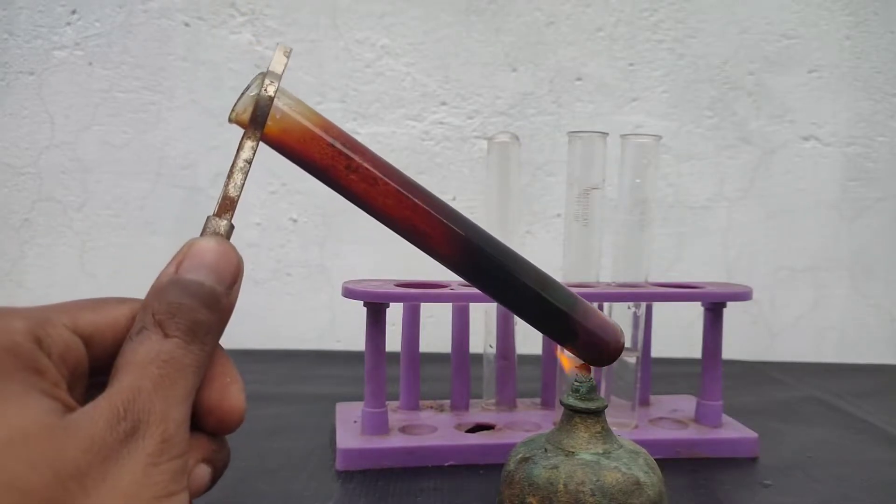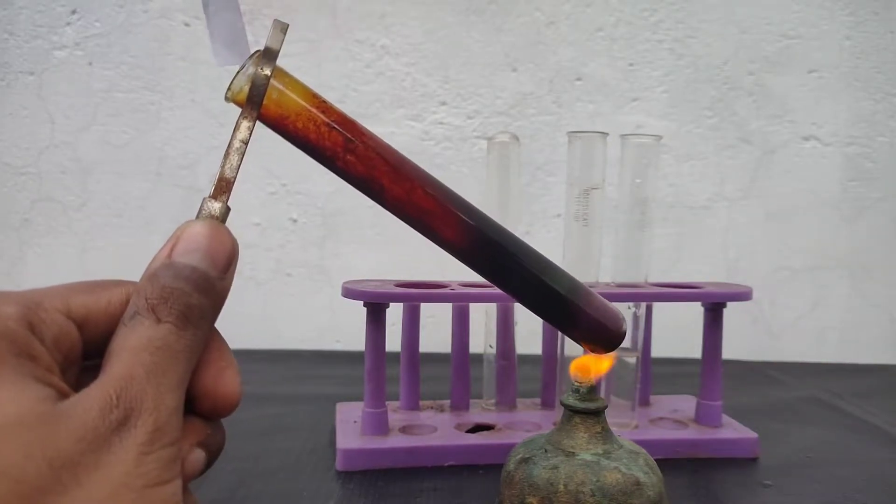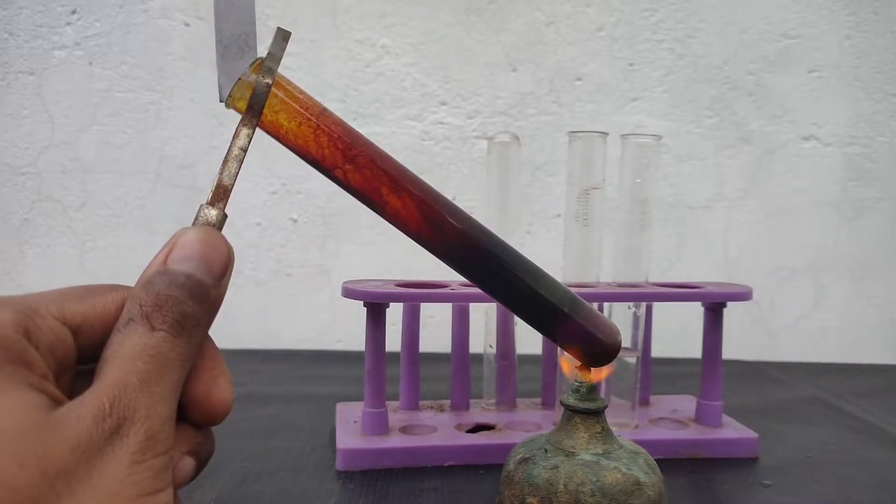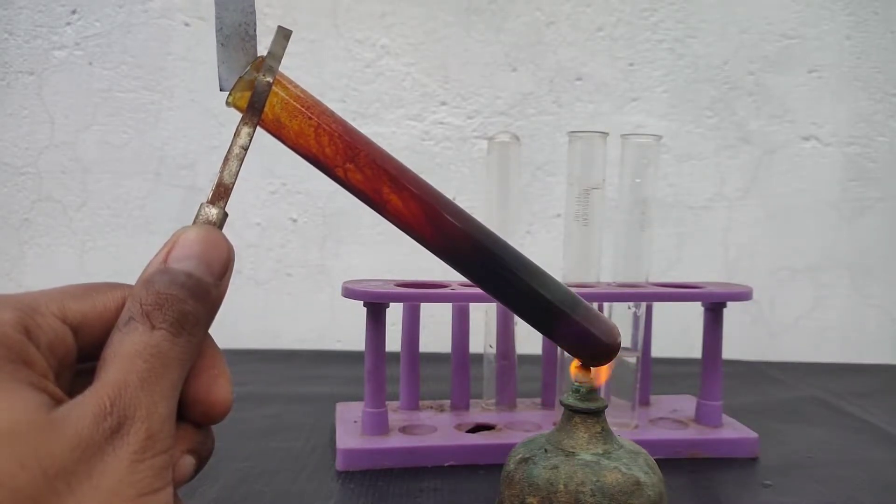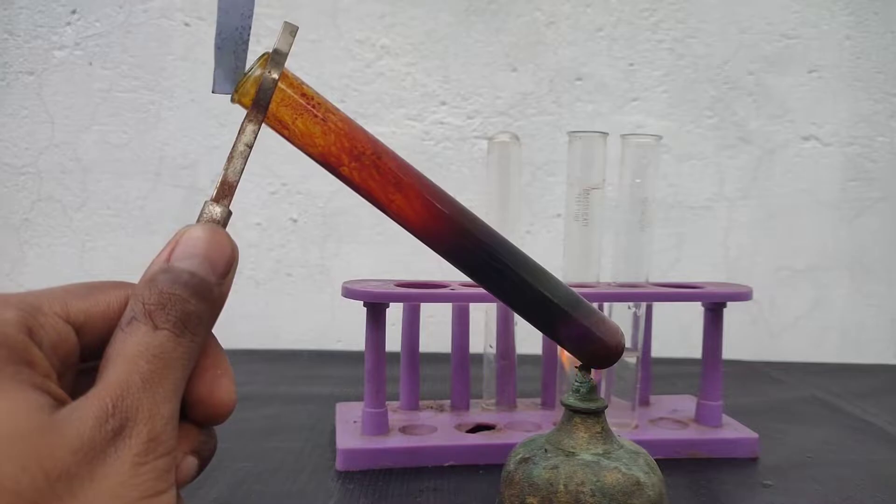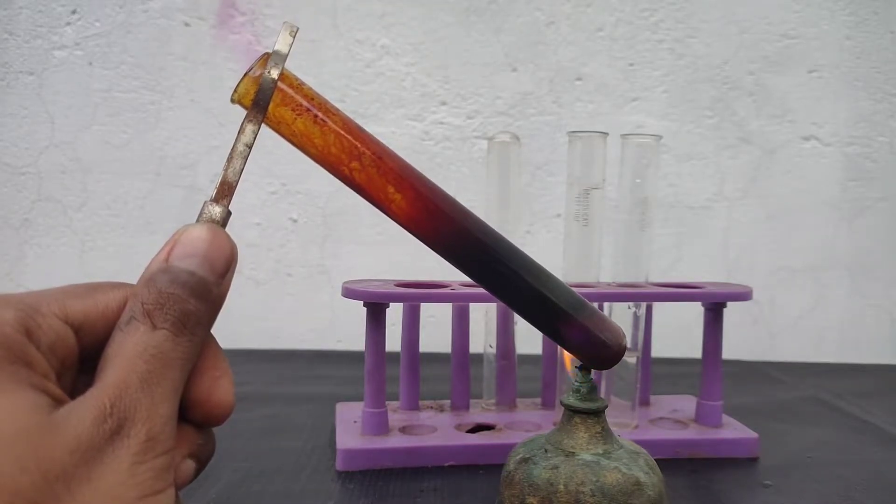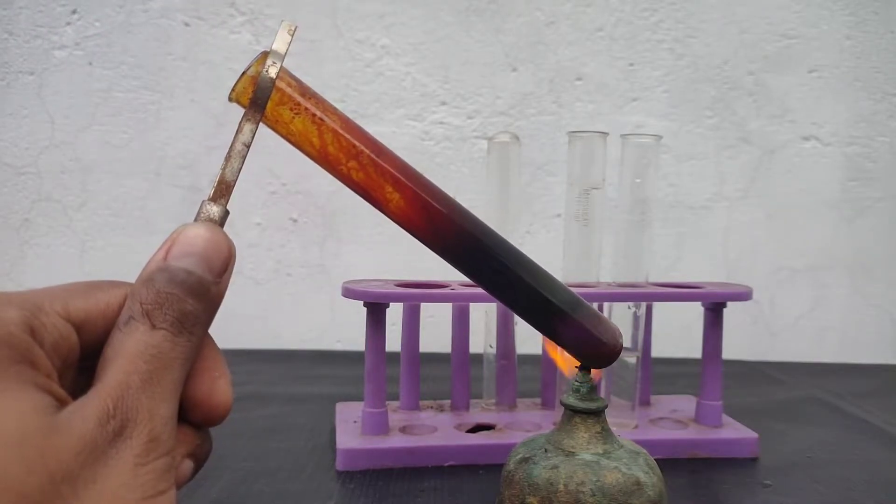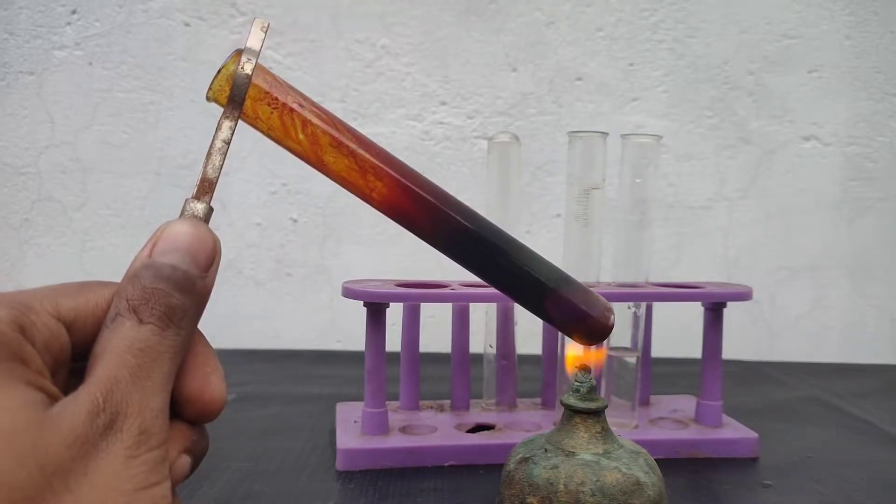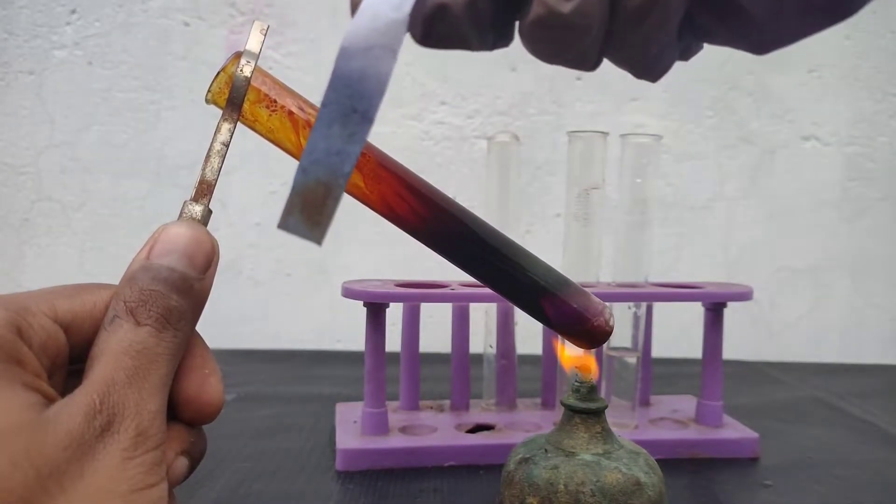You can also test these vapors with a starch paper. Just bring a starch paper at the mouth of the test tube. Appearance of a blue-black color confirms iodide. You can see violet vapors evolving outside the test tube, and it turns starch iodide paper blue-black.